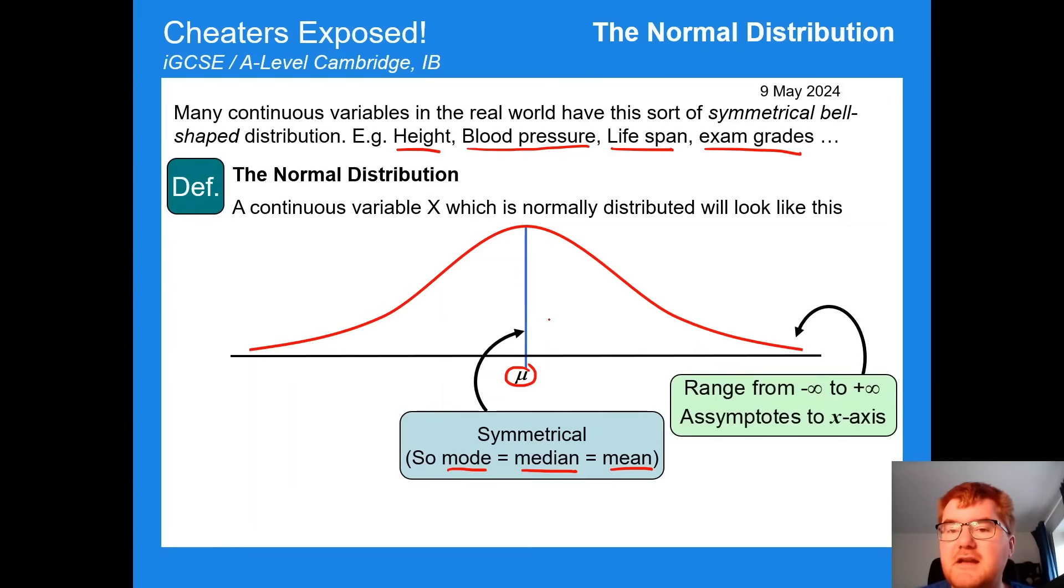Now the range of the normal distribution goes from minus infinity to plus infinity. And we have an asymptote to the x-axis, so it never actually touches the x-axis. And the total area under this curve is 1, which means that all our results, we've put them all together, will give us 1. So it's the whole distribution of our sample size. Now we're going to be using this to actually test out whether there's actually been some cheating going on.